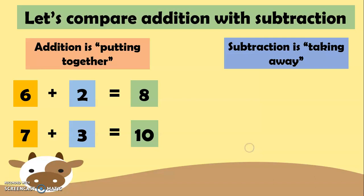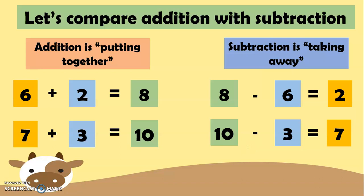Meanwhile, subtraction is taking away. So, this is the inverse or the opposite of addition. So, 8 minus 6 equals 2. And 10 minus 3 equals 7. There you go.